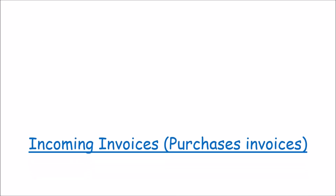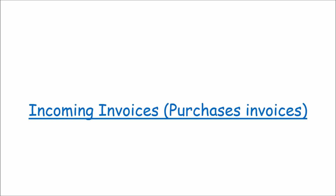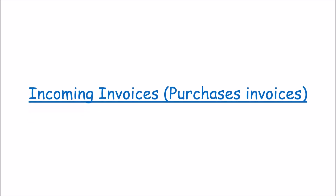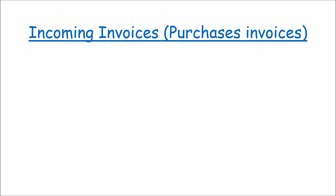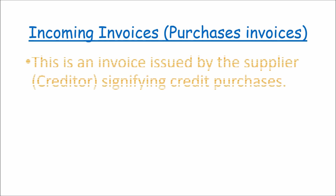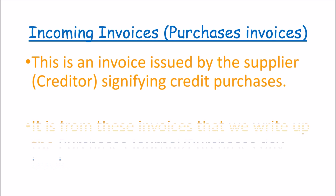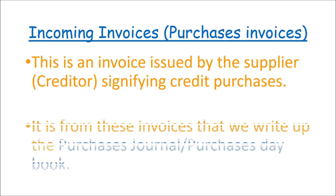So, a purchase invoice, or an incoming invoice, or an inward invoice, is an invoice issued by the supplier — who happens to be the creditor — signifying credit purchases. It is from these invoices that we write up the purchaser's journal, which is also known as the purchaser's debt book. The purchaser's journal is a book of original entry, and we shall discuss it further in a later session.